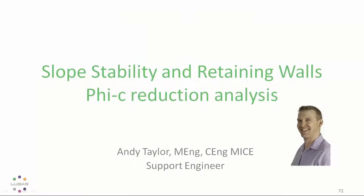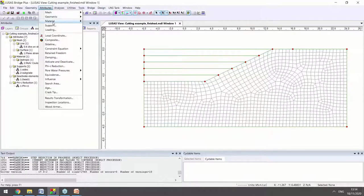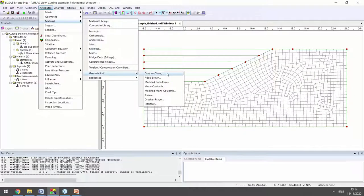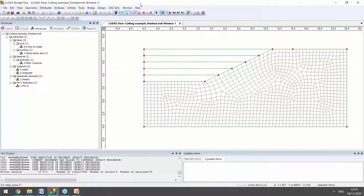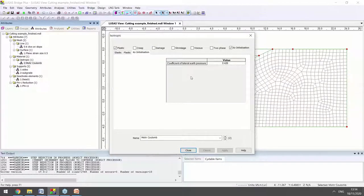So now Andy will show us the new Geotechnical Phi C analysis tool. Thank you very much, Terry. So this is a 2D analysis of a slope with a cutting that's been excavated in stages. We can define soil materials through attributes, material, geotechnical, where we've got the new Hoek-Brown material and recently added Duncan Chang material. But in this particular model, I've used a Mohr Coulomb material.